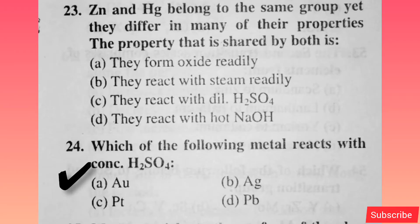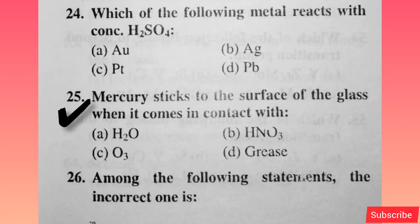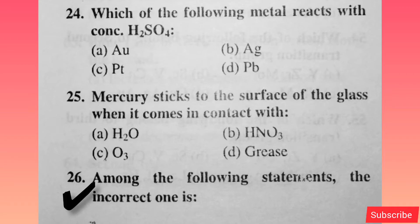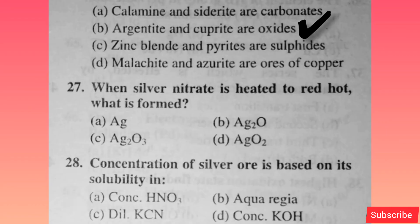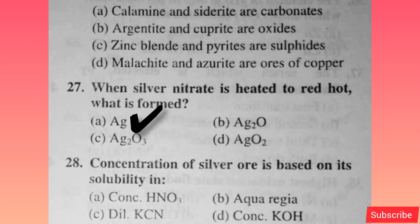Which of the following metal reacts with concentrated H2SO4? Option B is right. Mercury sticks to the surface of glass when it comes in contact with grease — option D is correct. Among the following statements, the incorrect one is — option B is right. When silver nitrate is heated to red hot, what is formed? AG — option A is correct.